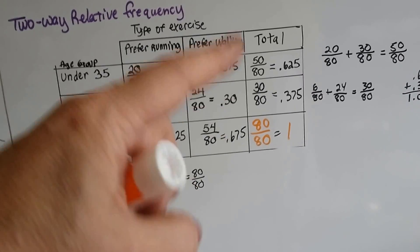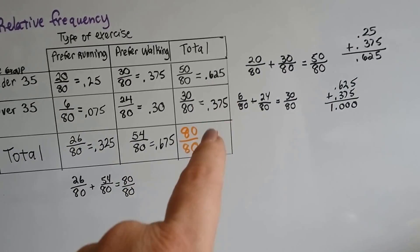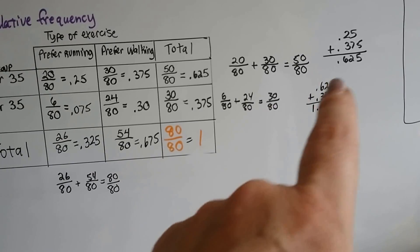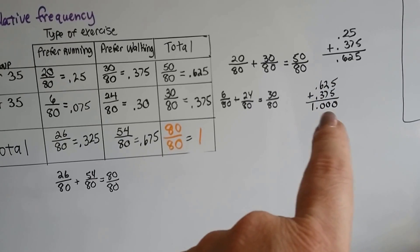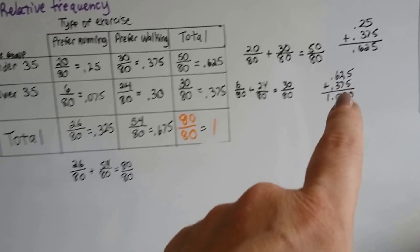And we can total them coming down this way. When we add 0.625 to 0.375, we get 1.000.